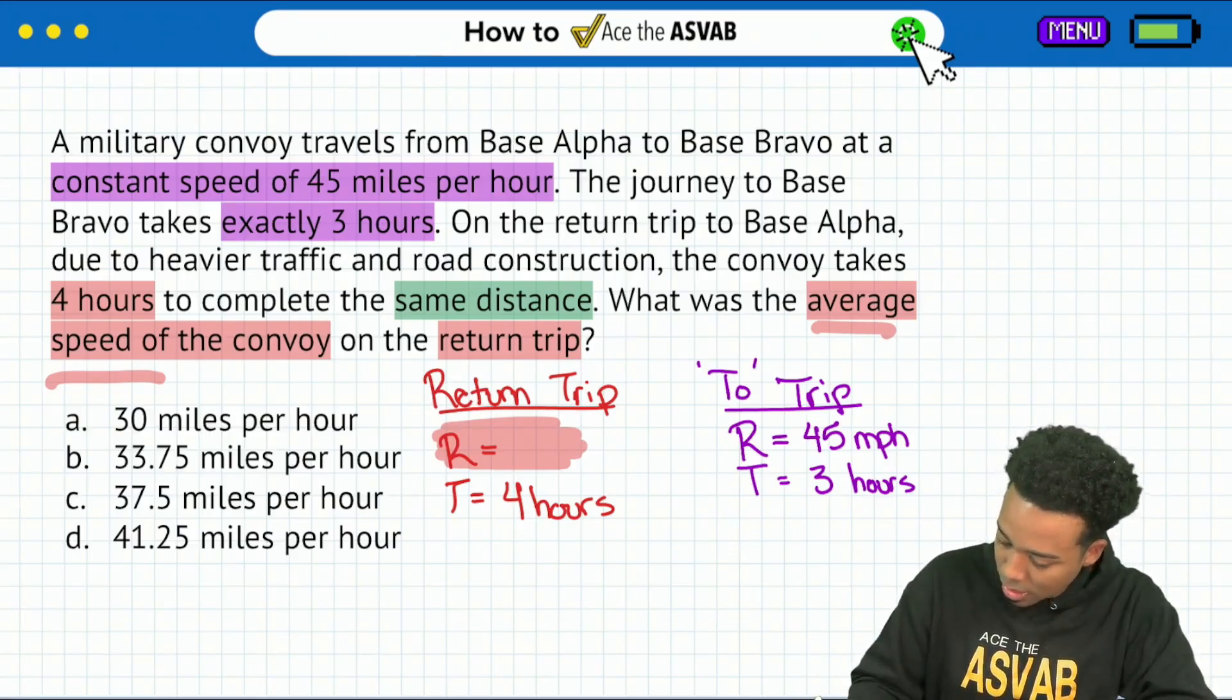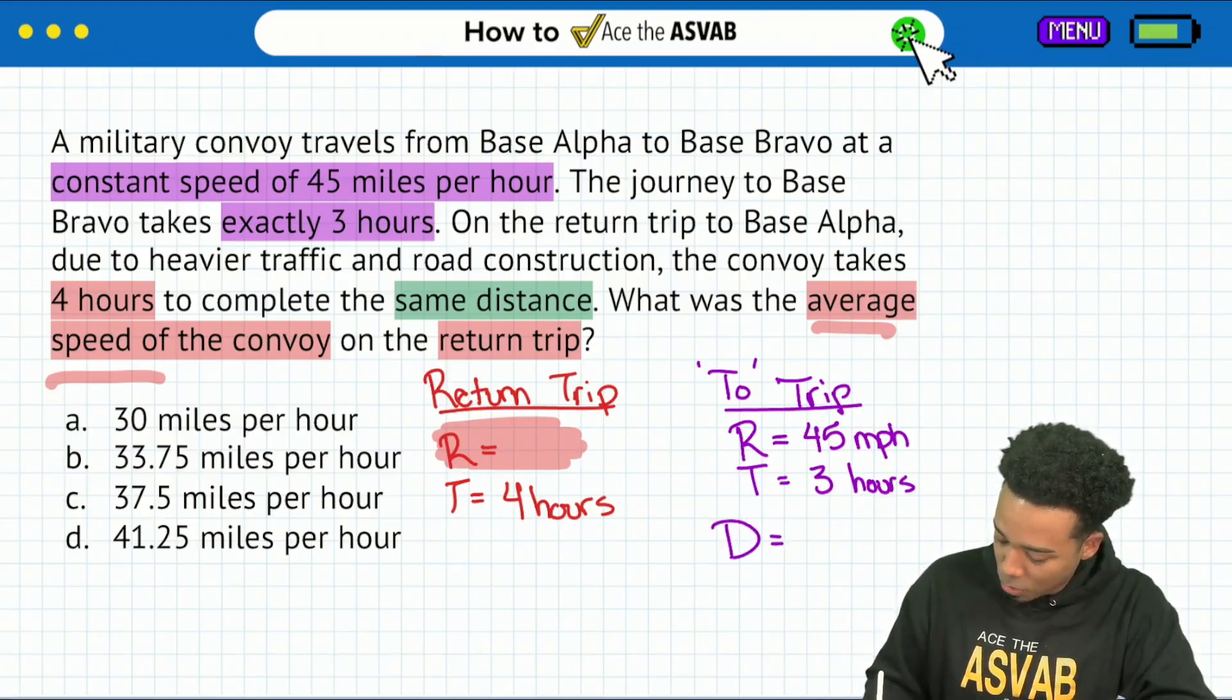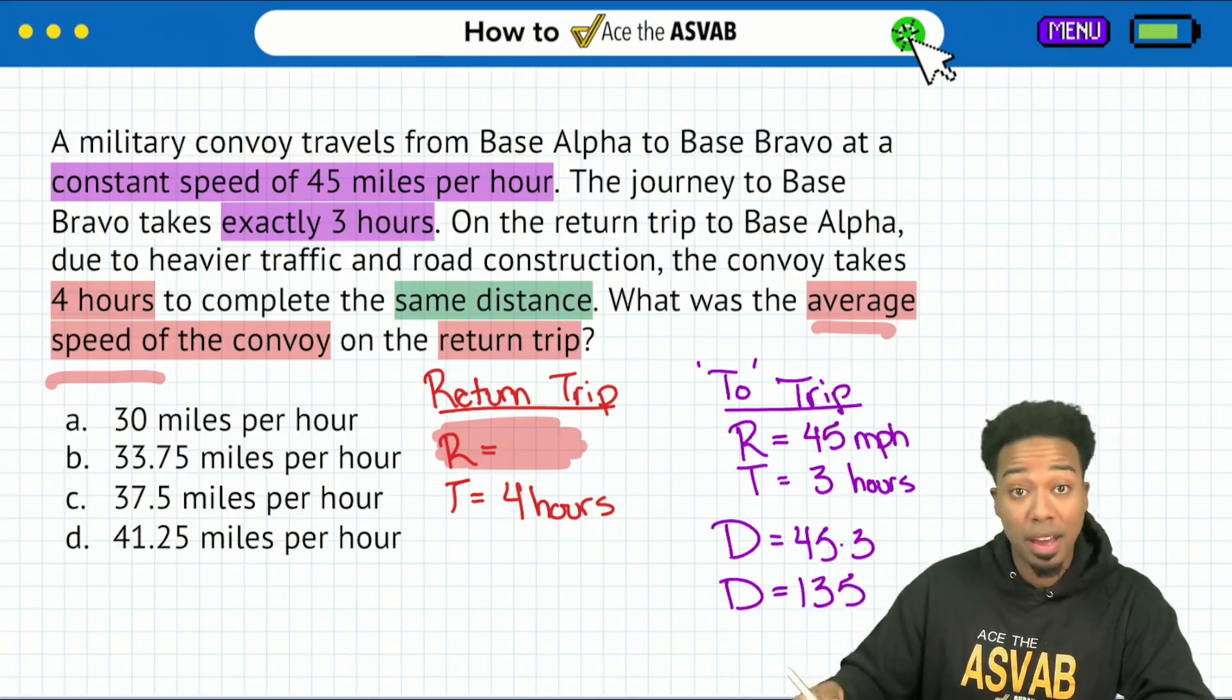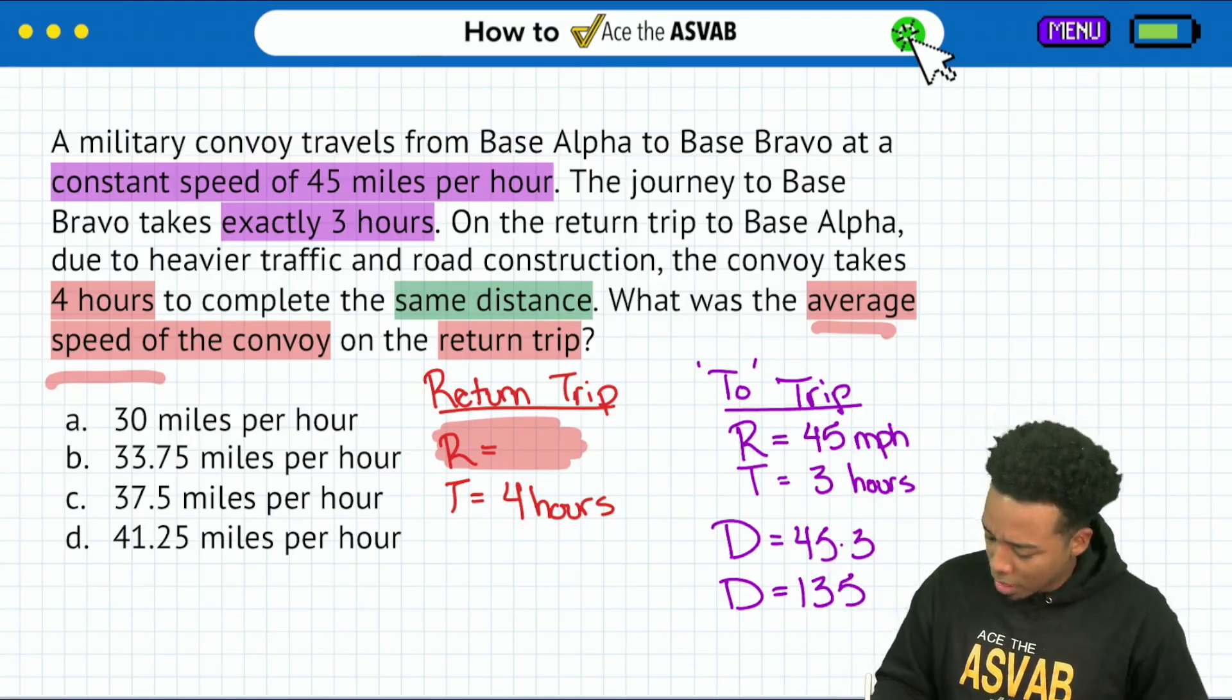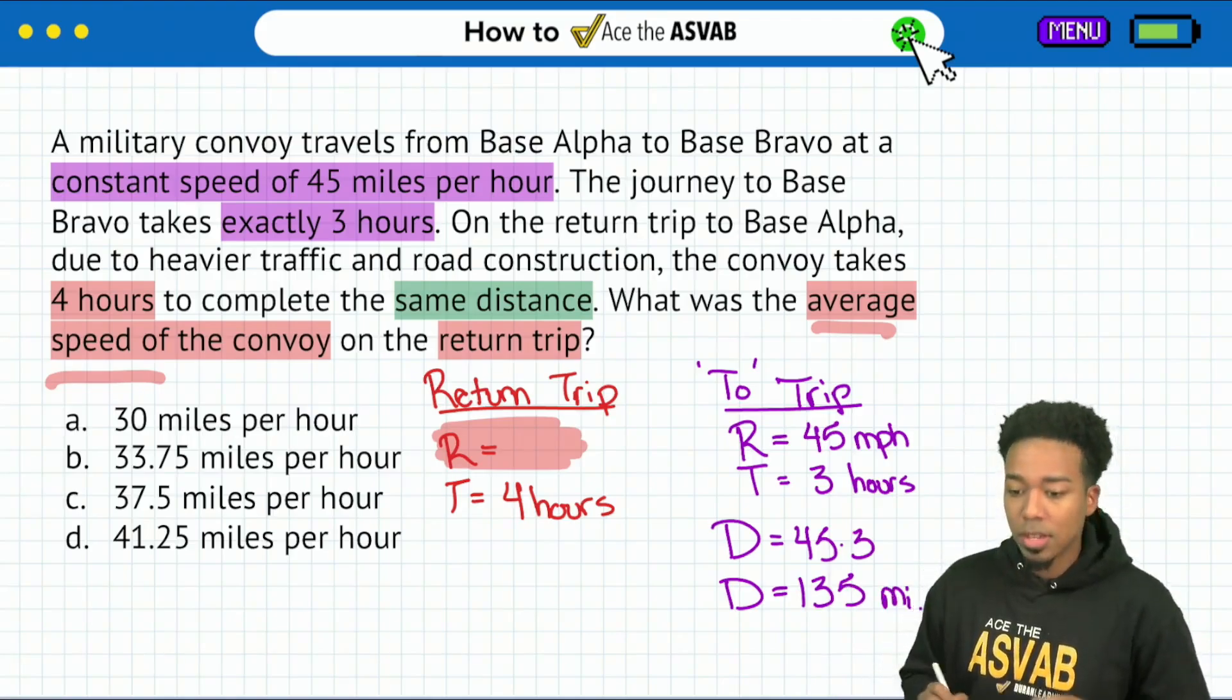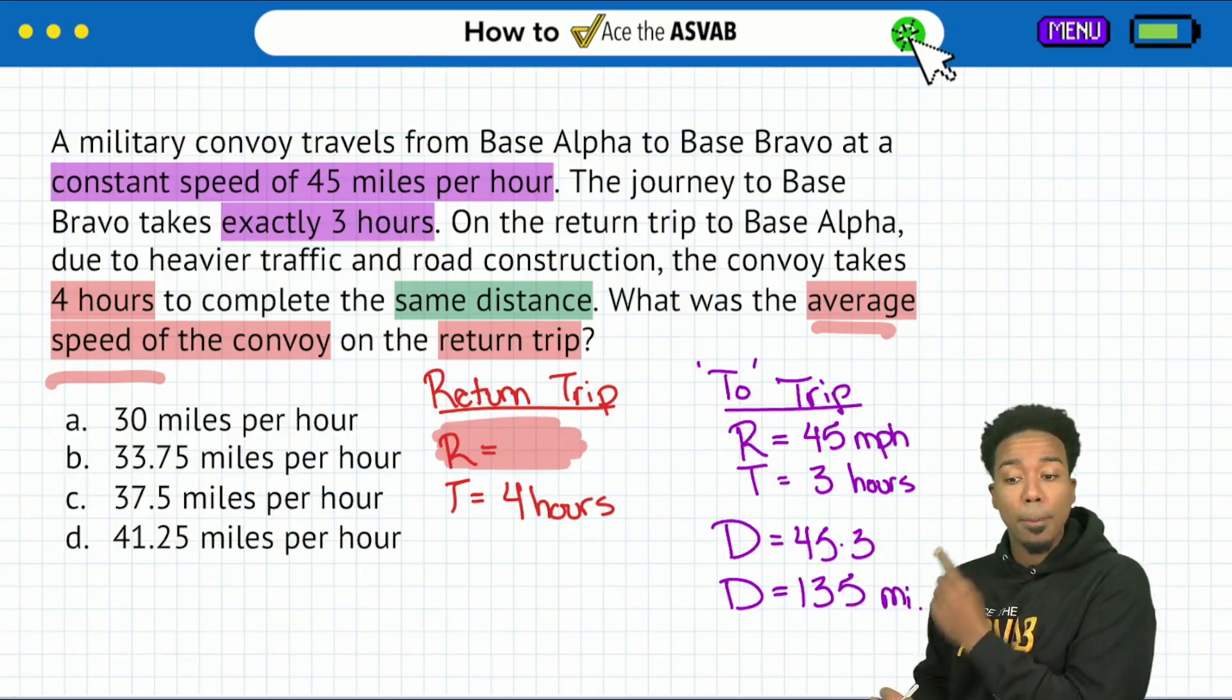So here we go. The distance right over here. I'm going to grab purple. So the distance equals rate times time or 45 times 3. So the distance to base Bravo is 135. If you need to go ahead and calculate that, feel free to do that by hand.